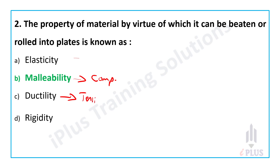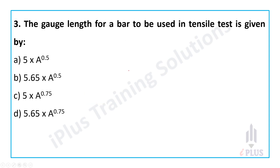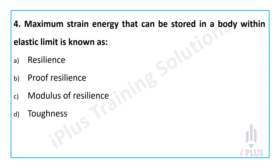Third question: the gauge length for a bar to be used in a tension test is given by the formula. Options: 5 × A^0.5, 5.65 × √A, 5 × A^0.75, 5.65 × A^0.75. The answer is 5.65 × √A (i.e., 5.65 × A^0.5).